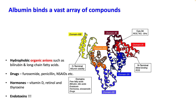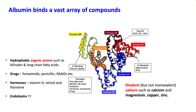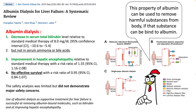Albumin binds a vast array of compounds — organic anions like bilirubin and long-chain fatty acids. It binds to many drugs; common among them are furosemide, penicillin, NSAIDs, etc. It also binds to hormones like vitamin D, retinol, and thyroxin. Albumin binds to divalent cations such as calcium, magnesium, copper, and zinc. This property can be useful to remove harmful substances from the body if those substances can bind to albumin.